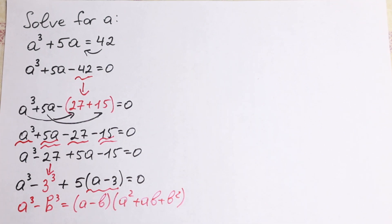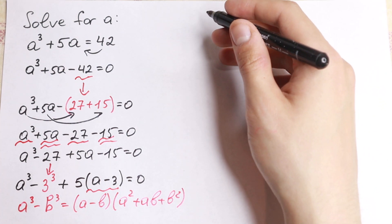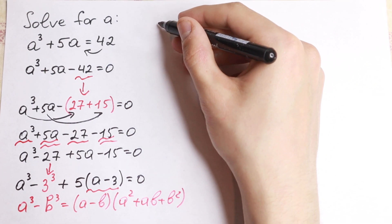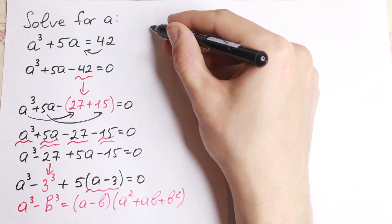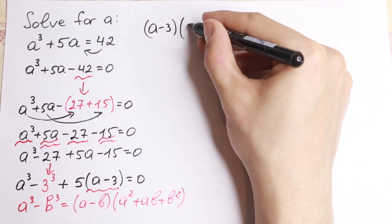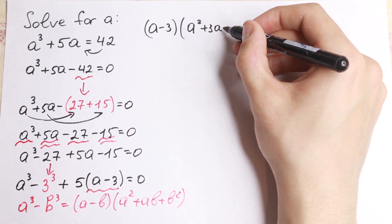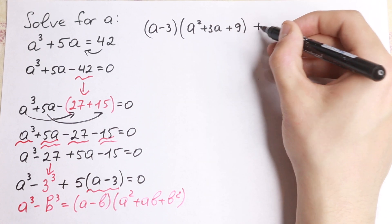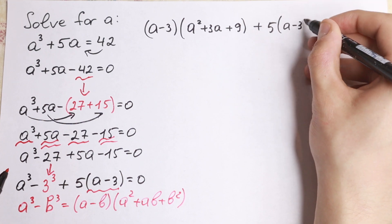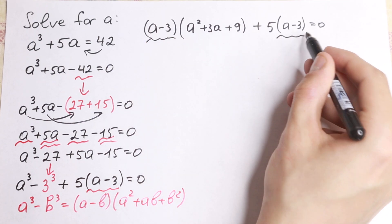If we apply the difference of cubes formula to a cube minus 3 cube, instead of b we write 3. We get a minus 3 times a squared plus 3a plus 9. Also, factoring 5 from 5a minus 15 gives us 5 times a minus 3. We can now see the common factor a minus 3 in both terms.